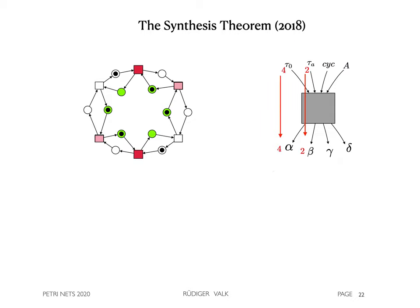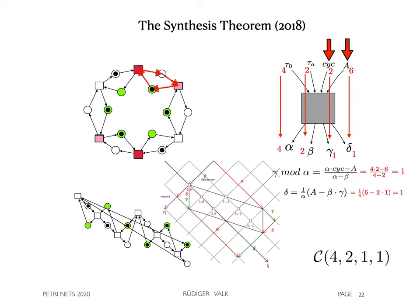Then, by these formulas, gamma equals delta equals 1 are computed. They are using as inputs the number capital A equals 6 of transitions and the length CYC equals 2 of a minimal cycle. As a result, we obtain the cycloid 4, 2, 1, 1.